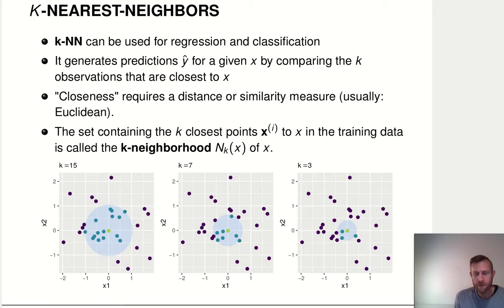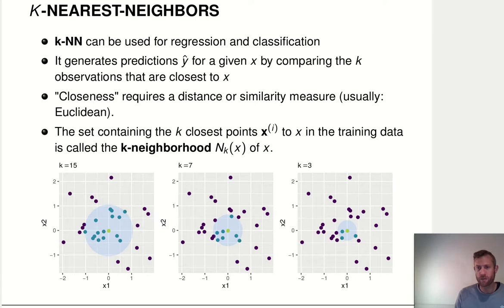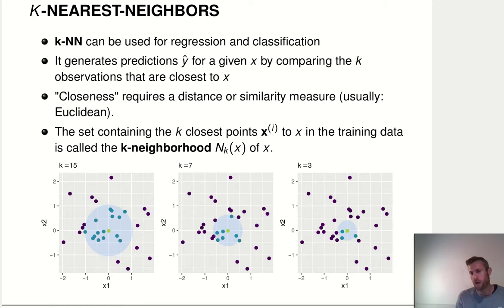What we need first is a way to quantify distance or similarity — which are opposite terms for the same concept. We require some kind of distance or similarity metric in the covariate space. In the simplest case, we'll just use the Euclidean distance. And the second thing is we have to decide how big we want the neighborhood to be: are we just looking at the one nearest neighbor, or three nearest neighbors, seven nearest neighbors, 50 nearest neighbors?